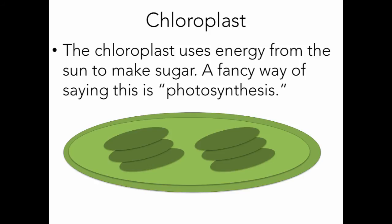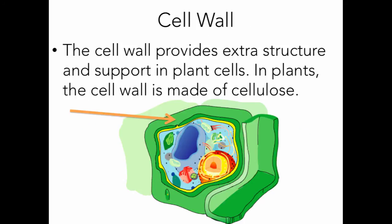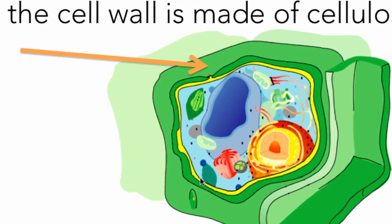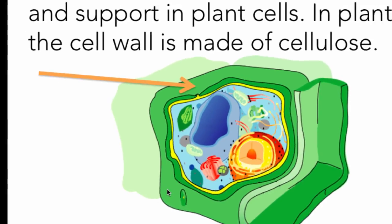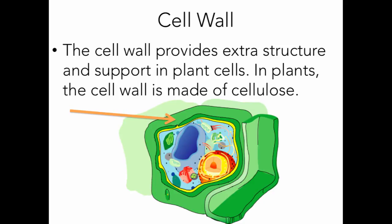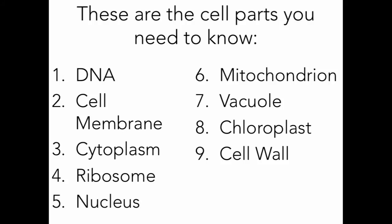Next is the cell wall, which provides extra structure and support in plant cells. In plants, the cell wall is made of a sugar known as cellulose. Looking at this image, there's a green layer and a yellow layer on the outside — if a cell has two layers, the outside layer is the cell wall. All cells have the cell membrane (plasma membrane), but the extra outer layer, if present, is always the cell wall.